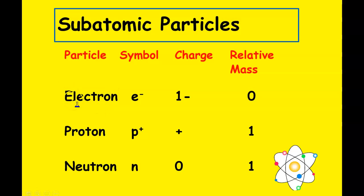Your first subatomic particle is the electron. The symbol for the electron is e with a negative, because its charge is negative one. Its relative mass is essentially zero — compared to the other two particles it has no mass. In your notes you could put zero, meaning it has no real mass.